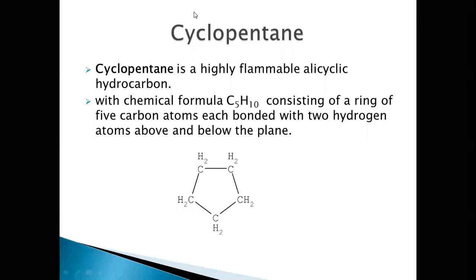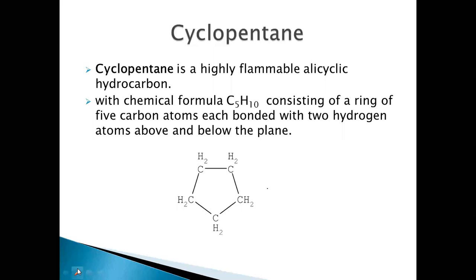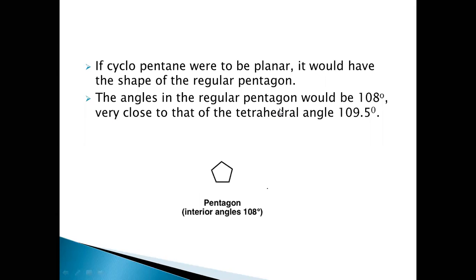Now let's discuss about the conformational structures of cyclopentane. If you look at the structure of cyclopentane, it's nothing but a five-membered ring. It's a cyclic ring with two hydrogens on each of these carbons, so the molecular formula is nothing but C5H10, consisting of 10 hydrogens.